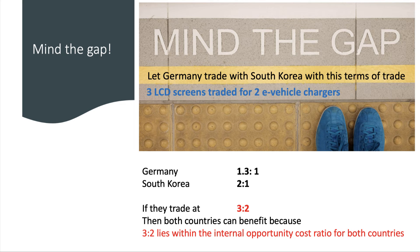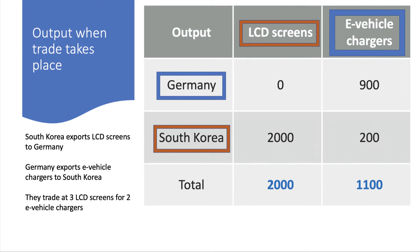So let Germany trade with South Korea. With this terms of trade they will trade three LCD screens for two e-vehicle chargers. Germany has a lot of e-vehicle chargers — originally it had 600 LCD screens and 450 chargers, and it would be great if they could do better than that. South Korea originally had 1,200 LCD screens and 600 chargers. Now we trade three for two: South Korea will be exporting LCD screens to Germany, and Germany will be exporting e-vehicle chargers to South Korea at a ratio of three for two.